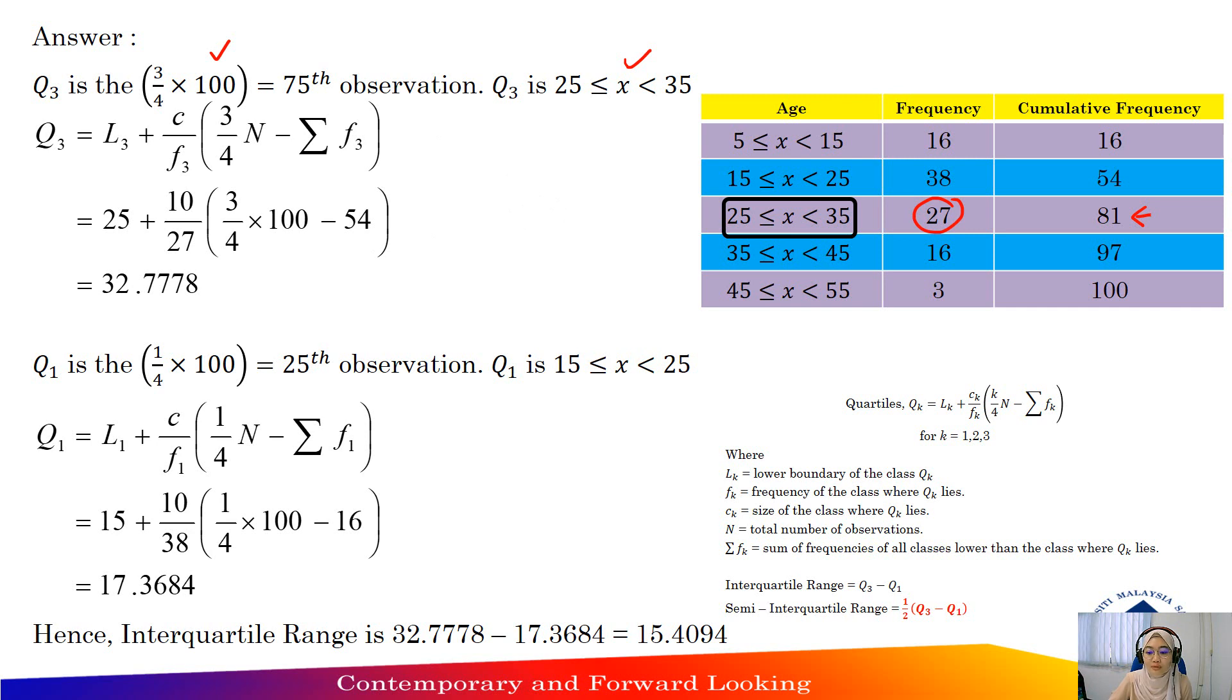minus sum of frequencies of all classes lower than the class where Q3 lies. So 16 plus 38 equals 54. So 54 here. You will get 32.7778.